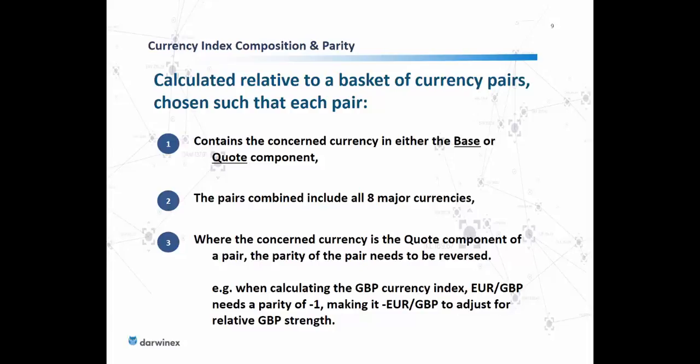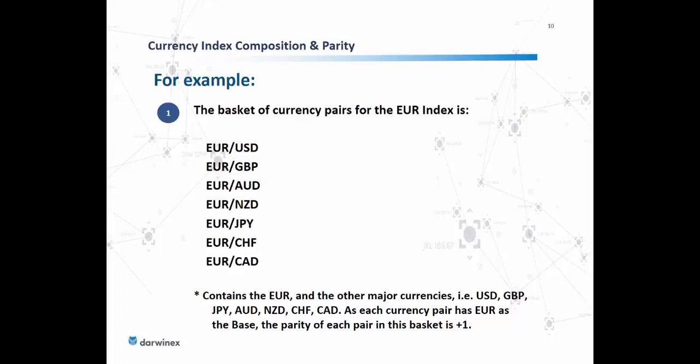For example, when calculating the British Pound Currency Index, euro/GBP needs a parity of minus one, making it negative euro/GBP to adjust for relative GBP strength — because GBP is the quote component, its parity must be negated. The basket for the euro index is: euro/dollar, euro/GBP, euro/Australian dollar, euro/New Zealand dollar, euro/Japanese yen, euro/Swiss franc, and euro/Canadian dollar. In this case, the euro forms the base component of all currency pairs in its basket, so the parity of each pair is plus one and no changes need to be made.